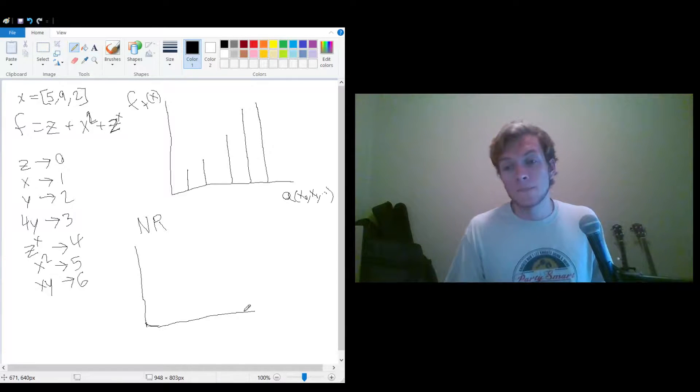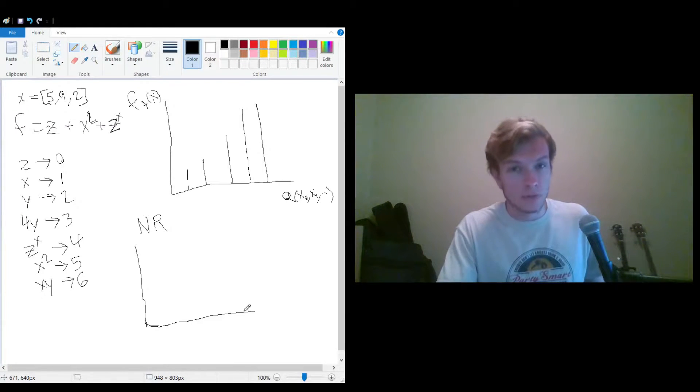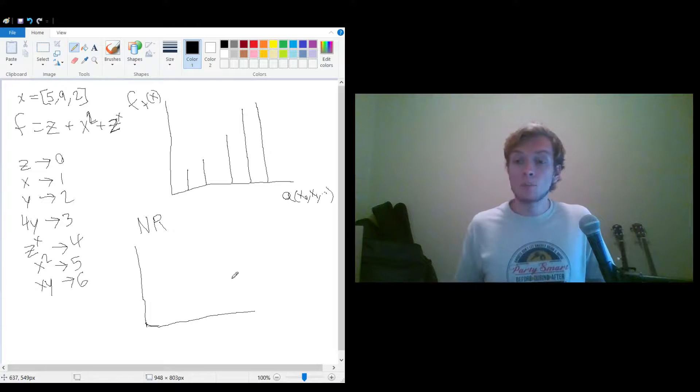So what these iterative methods do is they constantly get closer and closer to the answer, assuming that they converge. And even though there is error every time, they're getting closer and closer so that error approaches a very small number. So you can't get to the exact answer this way, but you can get pretty close and you'll get enough significant figures that for whatever you're doing, you'd be satisfied.